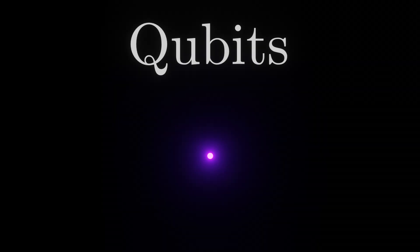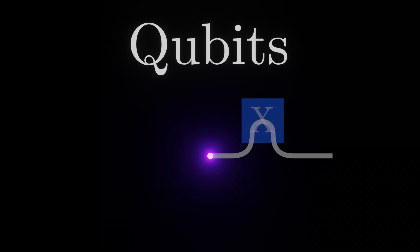In this video, we'll look at qubits, strange objects used to store information in a quantum computer. We'll also look at how we can manipulate a qubit by passing it through different logic gates.